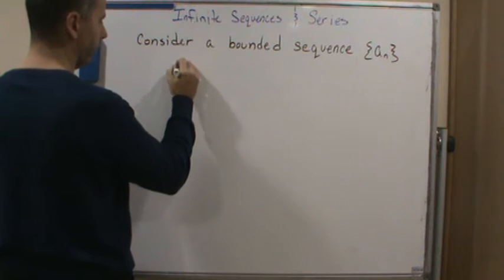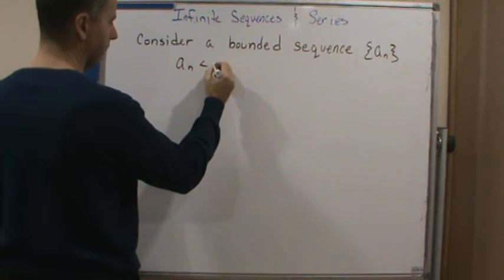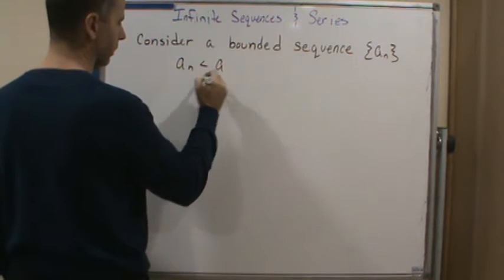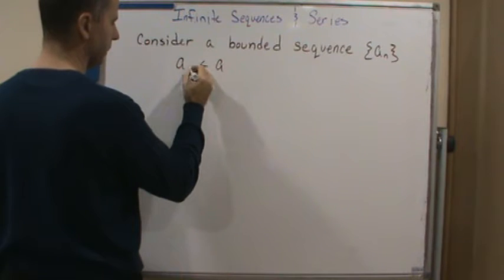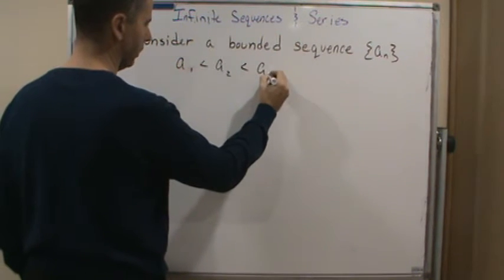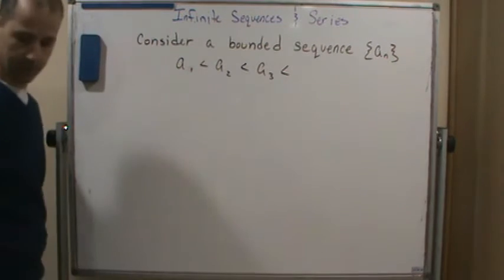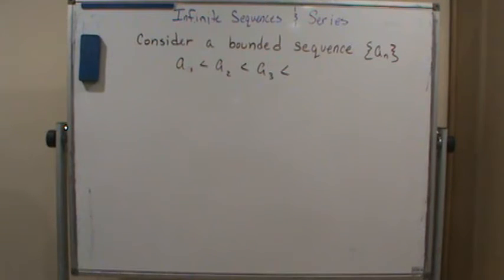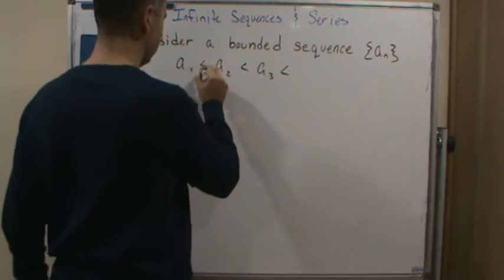So we have a sub n is less than a sub 1, a sub 2, a sub 3, and so on. Or equal to.